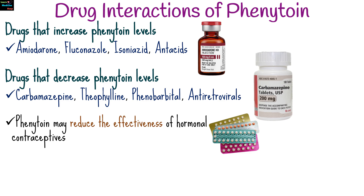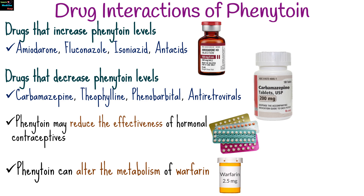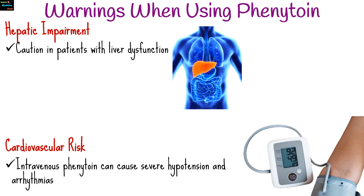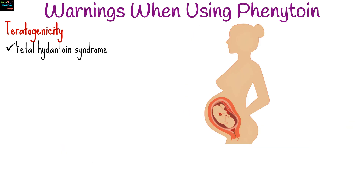Phenytoin may reduce the effectiveness of hormonal contraceptives. It can also alter the metabolism of warfarin, affecting blood clotting. Caution should be observed in patients with liver dysfunction. Intravenous phenytoin can cause severe hypotension and arrhythmias, especially if administered too quickly.